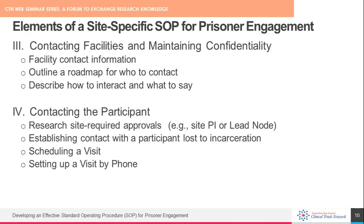Whether embedded in that section or in another section, another element to consider is listing contact numbers for facilities, describing steps and instructions for how to contact the facilities, and how to inquire about the participant while maintaining participant confidentiality. As noted, this is very important and required per the regulatory approvals. Our next presenter Amber will cover how to apply these and other strategies for locating incarcerated participants in this CTAN webinar series.